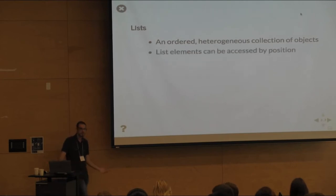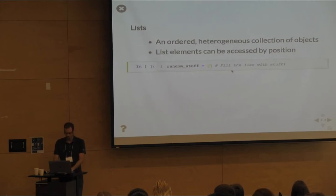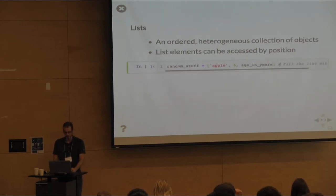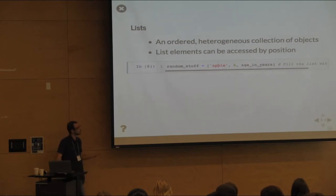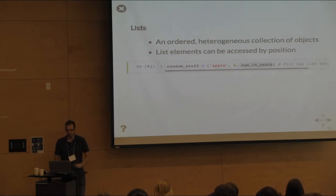List elements can be accessed by position. Here we have a list of random stuff — we can have a string 'apple', the number 6, and other variables. Now we have a list called random_stuff containing three elements: the string 'apple', the integer 6, and a variable age_in_years which we know is the integer 30.